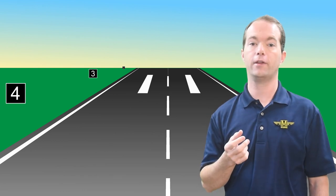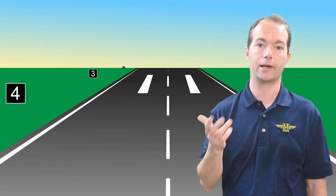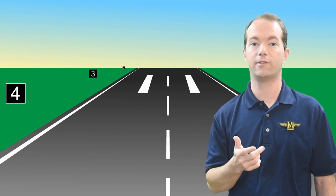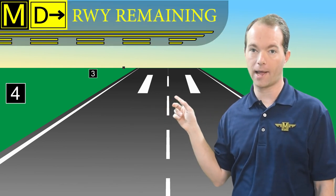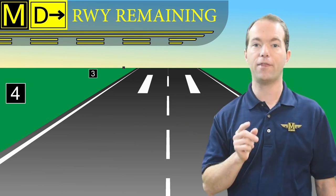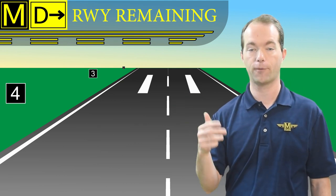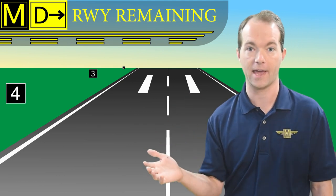Once you're on the runway, you might see a runway location sign, which looks like the taxiway location sign but with a number on it. You're more likely to see runway remaining signs, which are white numbers on a black background — these tell you how many thousands of feet of runway you have left before you run off the end.